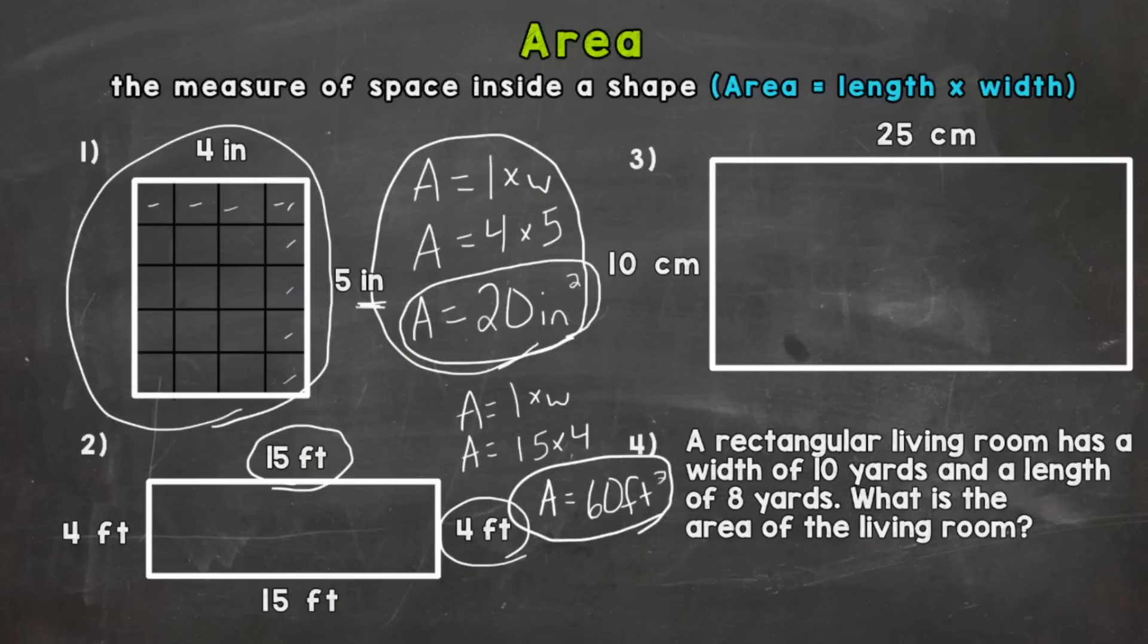So let's take a look at number three. Write out our formula first. Area equals length times width. Plug in.